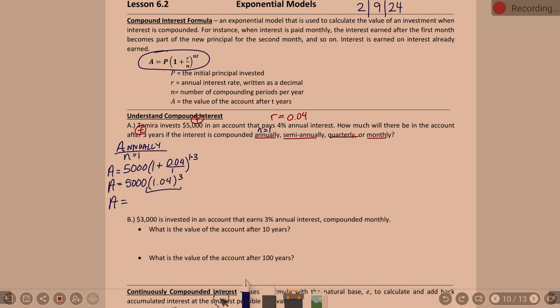Look inside those parentheses. What is 0.04 divided by 1? 0.04. What do you get when you add 1 to that? 1.04. So, this is 1.04 in the parentheses. My exponent, 1 times 3, is 3. Most calculators, you can just plug that in as is. Take a moment, plug it in, make sure you can get your calculator to cooperate with you. Does your answer match my answer? So, $5,620 and 32 cents.